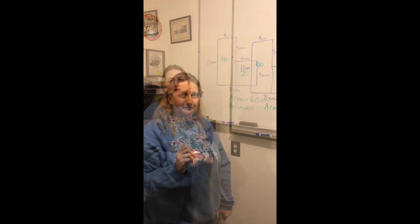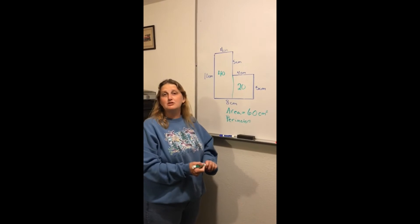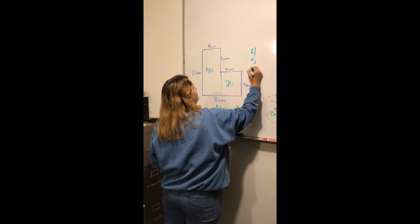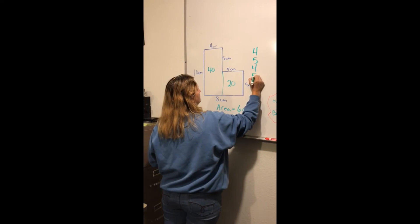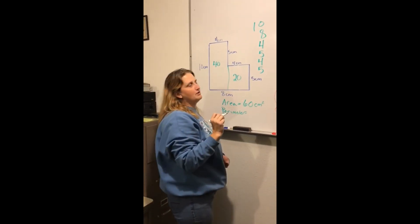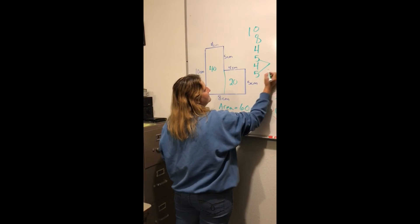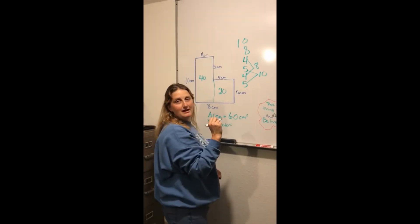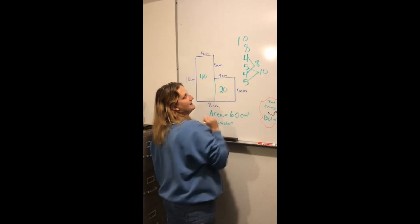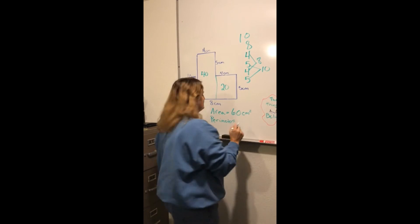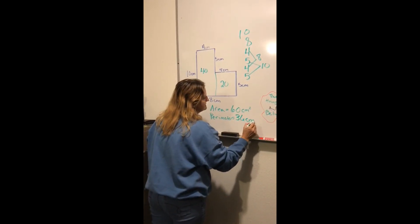Pause the video and figure out the perimeter. We're going to add up the perimeter by pieces using friendly numbers. We have sides of 4, 5, 4, 5, 8, and 10. I know 5 and 5 gives me 10, and 4 and 4 gives me 8. Now with friendly numbers: 8 plus 8 is 16, plus 10 is 26, plus 10 more is 36. So the perimeter equals 36 centimeters. Nice job!